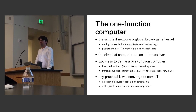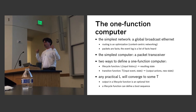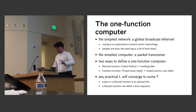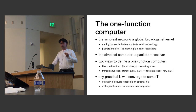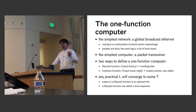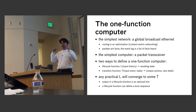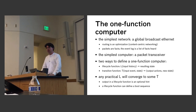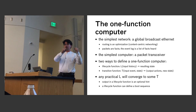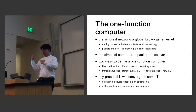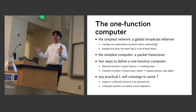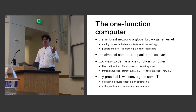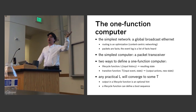Van Jacobsen has this great term, a content-centric network, where who sent the packet doesn't matter — what matters is what's in the packet. From the functional perspective, there are two ways to define a one-function computer: as a lifecycle function, where the state is a pure function of input history, or as a transition function, where an input event and old state produce output actions and a new state. In practice, any lifecycle function winds up spending most of its time as a transition function, since you're certainly not going to recompute everything each time you get a packet.